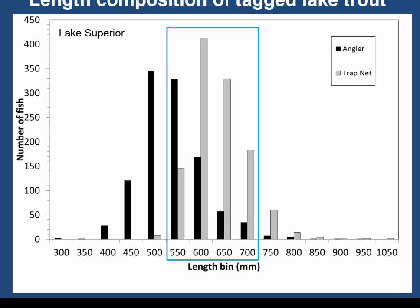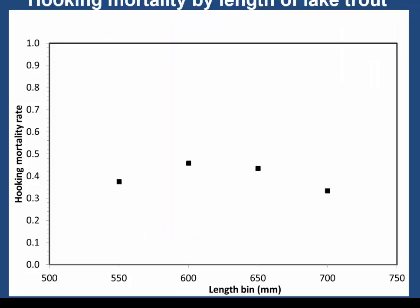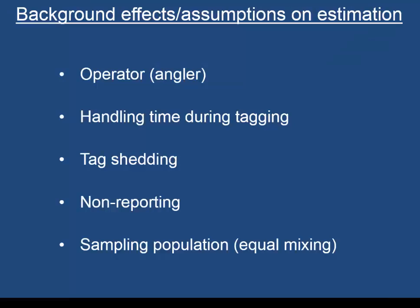We also looked at the effect of fish size. One challenge was that anglers tend to select smaller fish while trap nets select larger fish. When we focused on size ranges where the two groups overlapped, and estimated hooking mortality for those sizes, we did not detect an effect of fish size on hooking mortality. The earlier Loftus study indicated higher mortality for smaller fish, but we didn't have sufficient data to match up on smaller sizes.